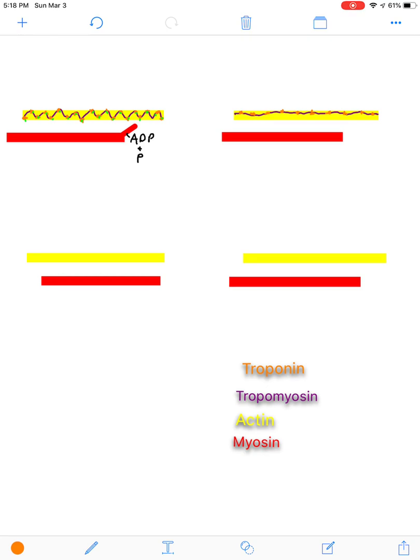And what this means is that myosin can now bind to actin. Now at first, it's going to bind lightly, but then it's going to build this really firm, almost handshake analogy kind of structure. So you can think of it as you grab someone's hand lightly at first, and then you really start gripping hard and shaking that person's hand.